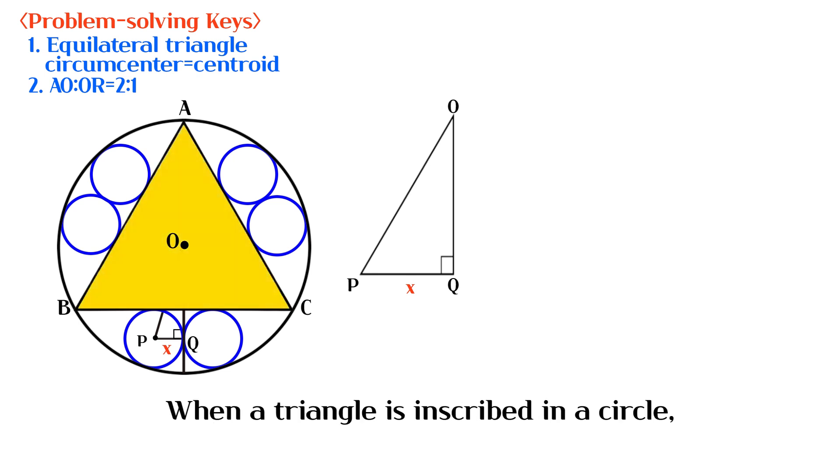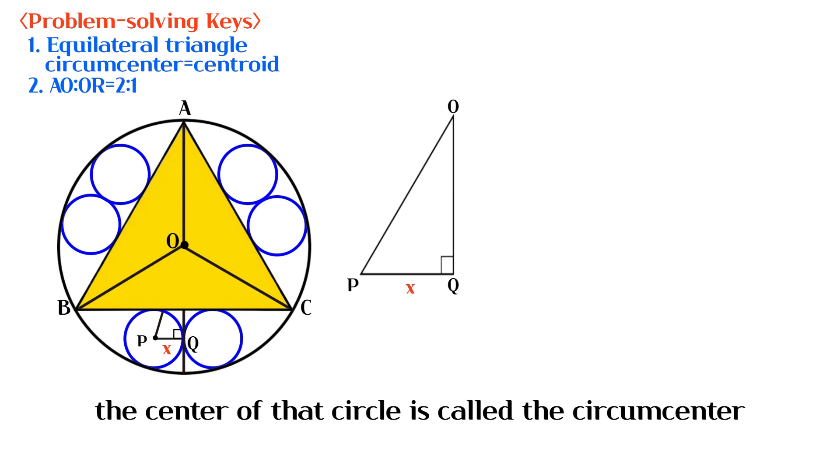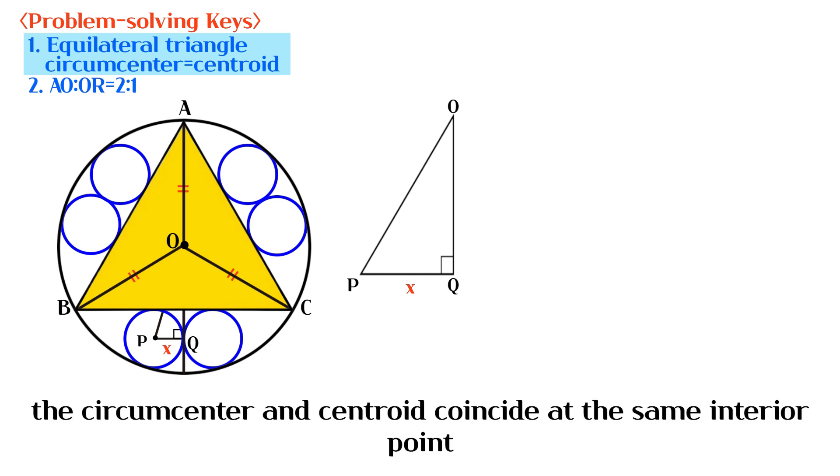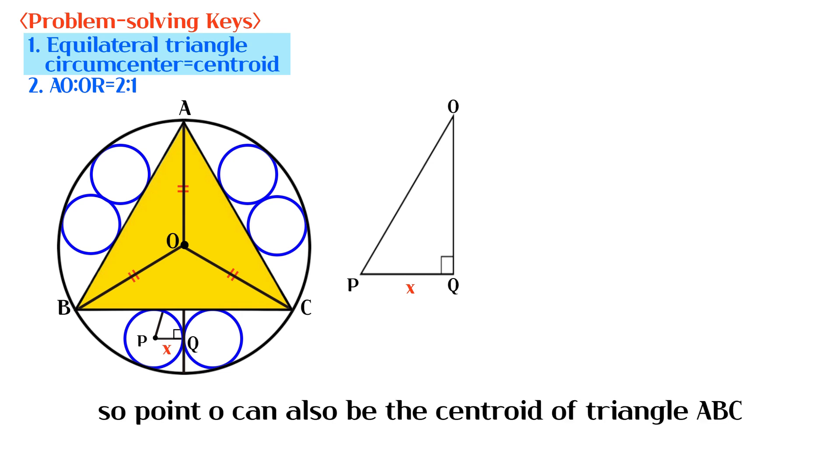When a triangle is inscribed in a circle, the center of that circle is called the circumcenter. And in an equilateral triangle, the circumcenter and centroid coincide at the same interior point. So point O can also be the centroid of triangle ABC.